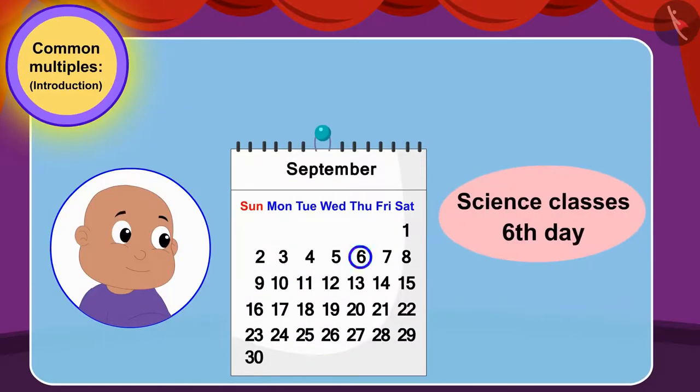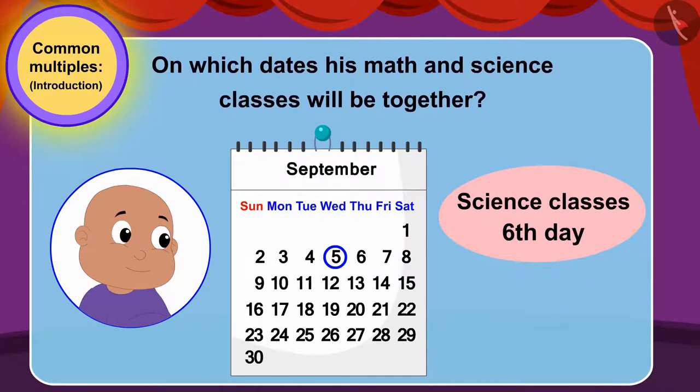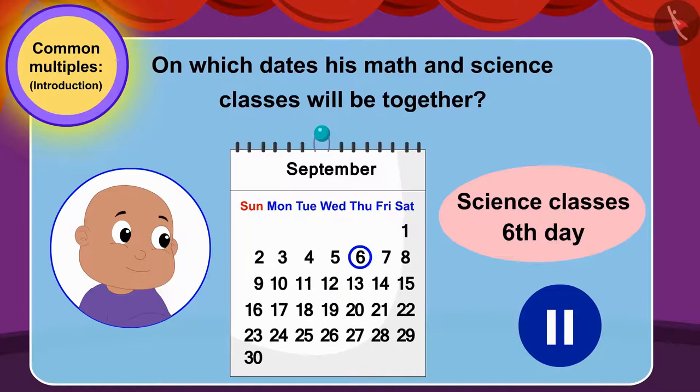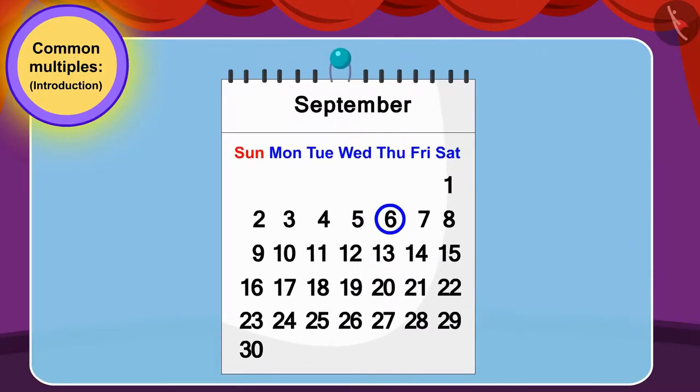Children, if Bablu's science class was every sixth day instead of every fifth, then can you tell on which dates his math and science classes will be together? You can stop the video and find the answer. Well done children, your answer is absolutely correct.